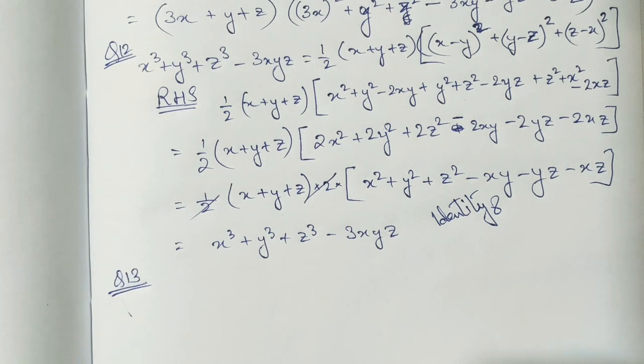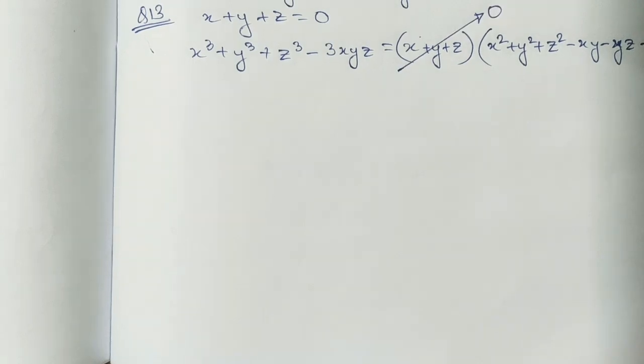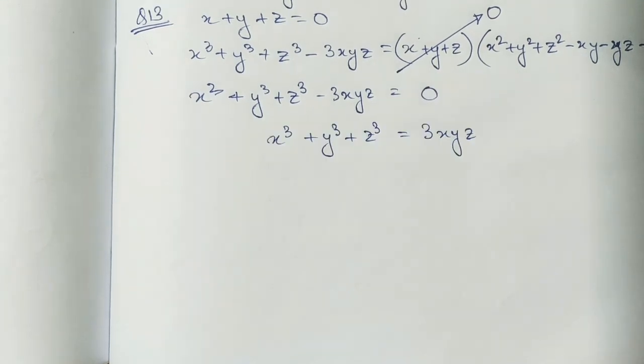Again question number 13, it is given that x plus y plus z is zero. Then by applying the eighth identity we get this. Now as per the question, this term is zero actually, therefore this whole term will be zero only. Therefore this is the required answer and we needed to prove this only.